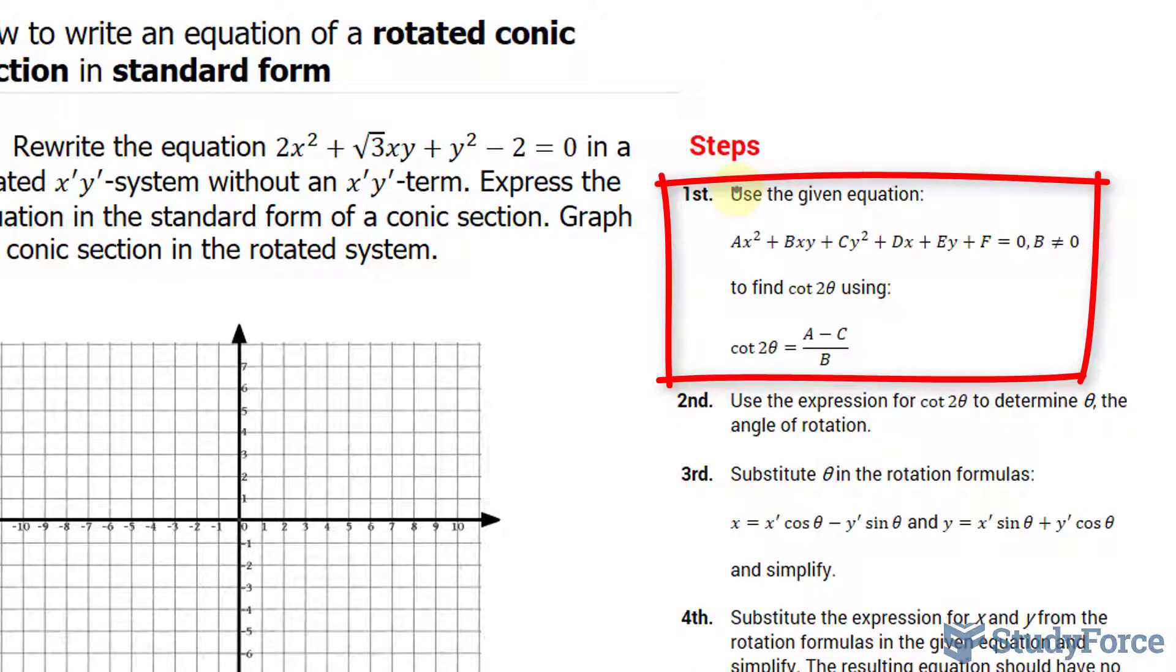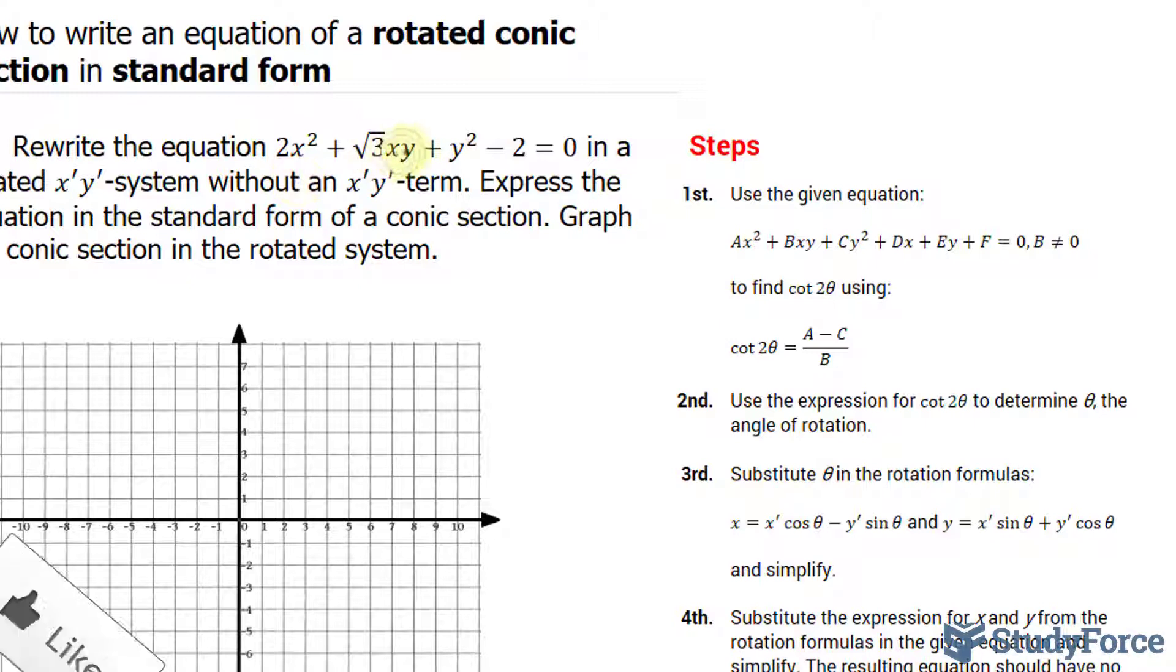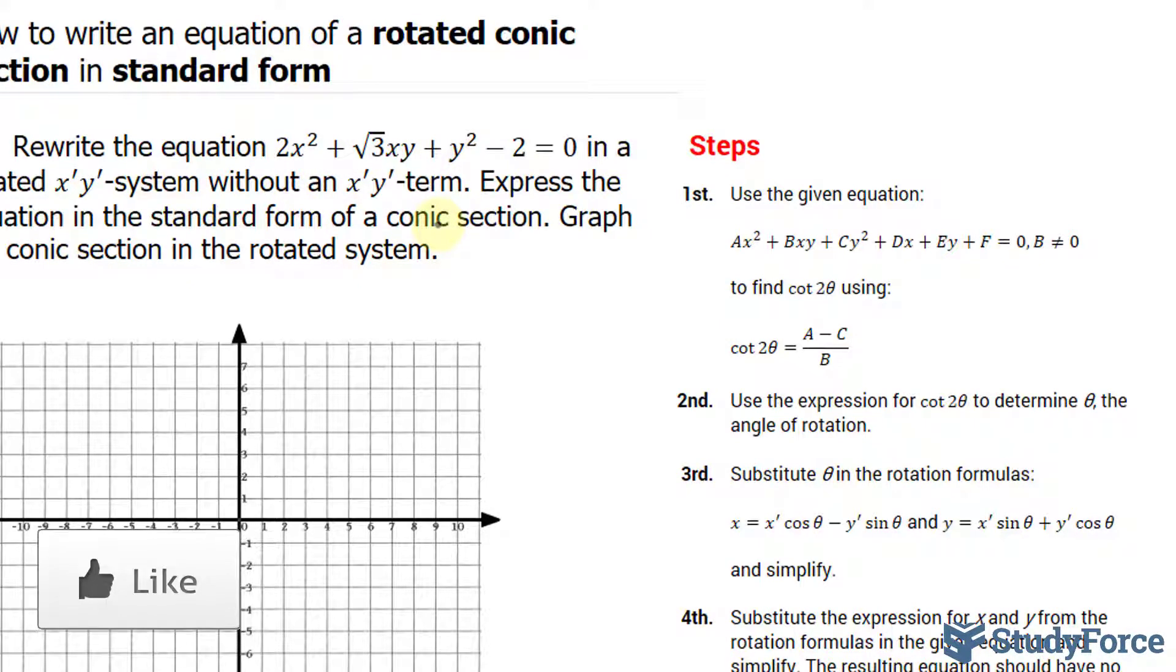In step number one, we're told to use the given equation that's in expanded form to find cotangent 2 theta using the formula also shown. So given our equation, 2x squared plus the square root of 3xy plus y squared minus 2, we can outline what our a, c, and b coefficients are. Starting with x squared, it has a leading coefficient of 2, and that represents a.